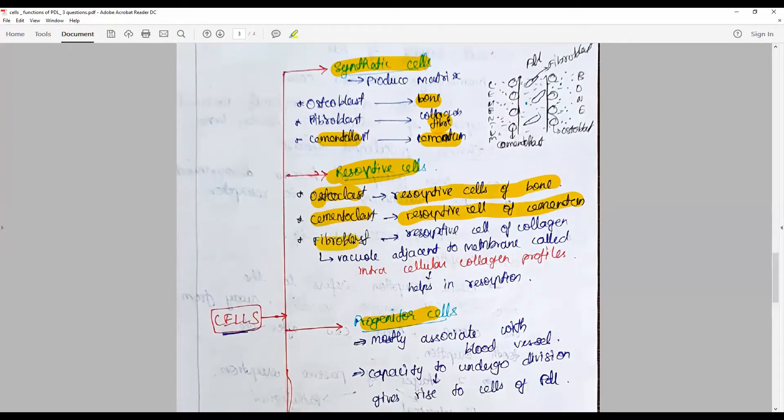Fibroblasts again produce collagen and are responsible for resorption of collagens. They have a vacuole adjacent to the membrane called phagosome and digest intracellularly the collagen and help in resorption. So they are both secretory and resorptive cells.